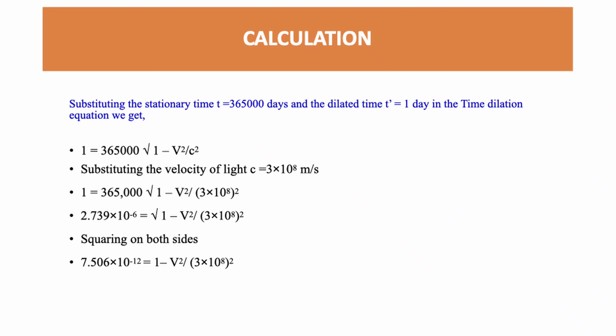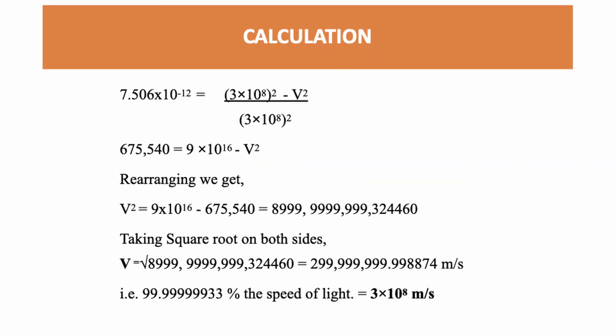we get 7.506×10⁻¹² = 1 - V²/(3×10⁸)². Expanding, 7.506×10⁻¹² = (3×10⁸)² - V²/(3×10⁸)². Taking the denominator to the left hand side,